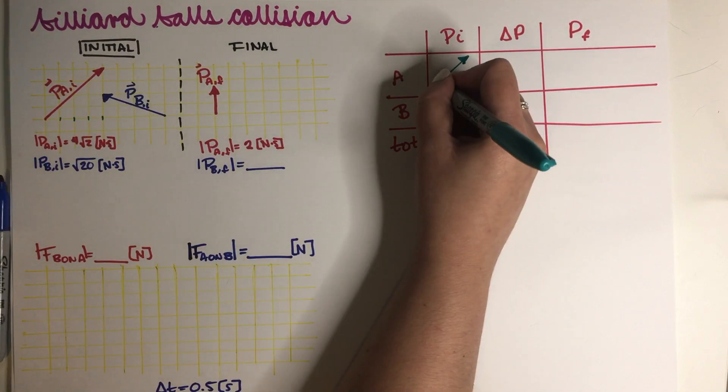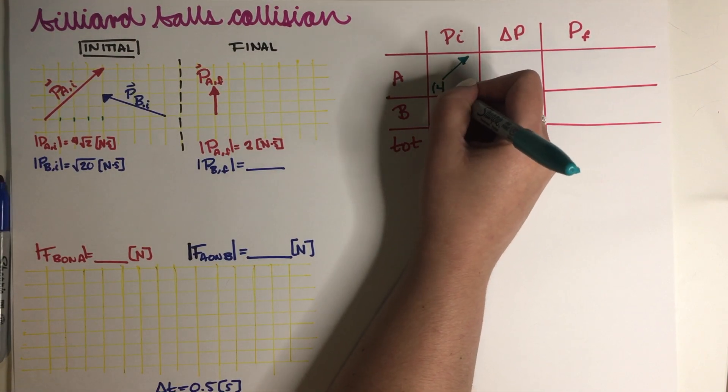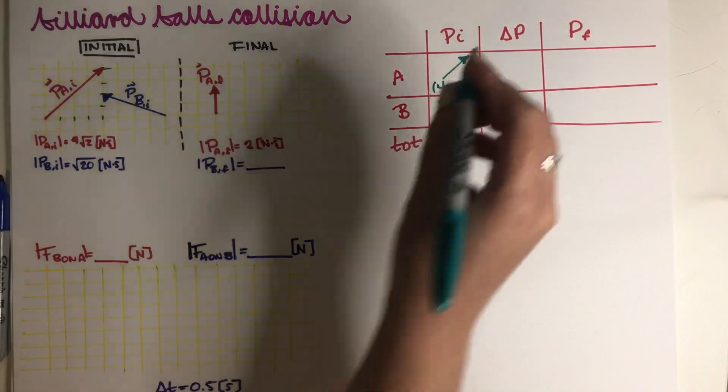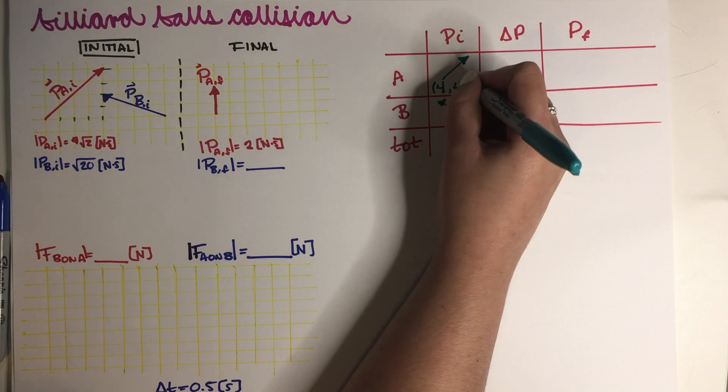So A is just something like this, but in terms of x and y components, A is 1, 2, 3, 4 x positive because it's going east, and then 1, 2, 3, 4 north. So like this.